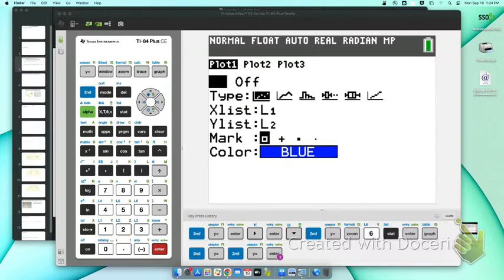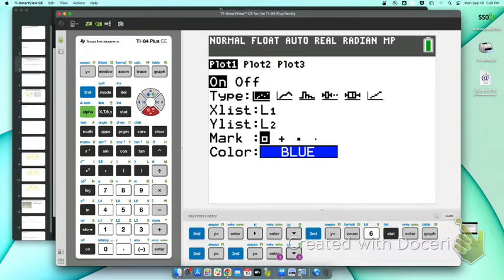Your on should be highlighted. Your scatter plot should be highlighted. Your X list should say L1 because that's where you put your X values. Your Y list should say L2 because that's where you put your Y list. For the mark, you can pick whichever one you want. If you can change colors, feel free to pick your color. Now, what if this did not say L1? Or what if I accidentally put my list into L2? Do I have to erase and start over? No. You can change the L1 and L2 to anything. Second and the 2 would change that to L2. Second and the number 1 gets it back to L1.